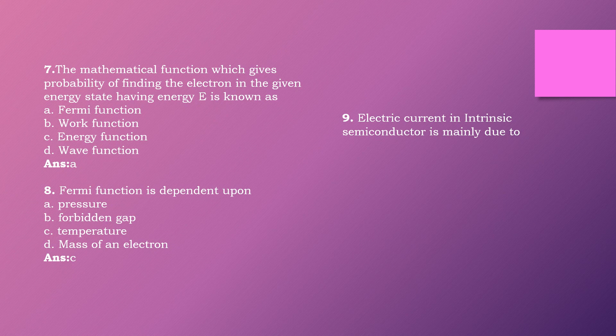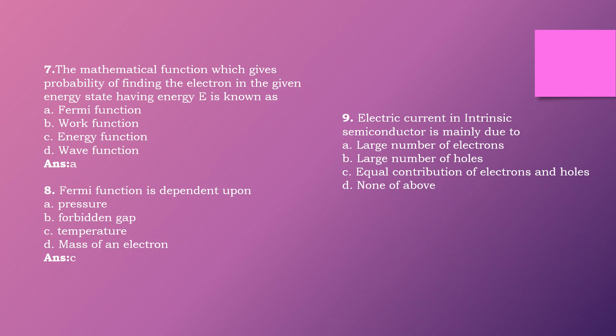Question nine: Electric current in an intrinsic semiconductor is mainly due to dash. Options are: large number of electrons, large number of holes, equal contribution of electron and hole, none of the above. The right answer is option C: equal contribution of electrons and holes.